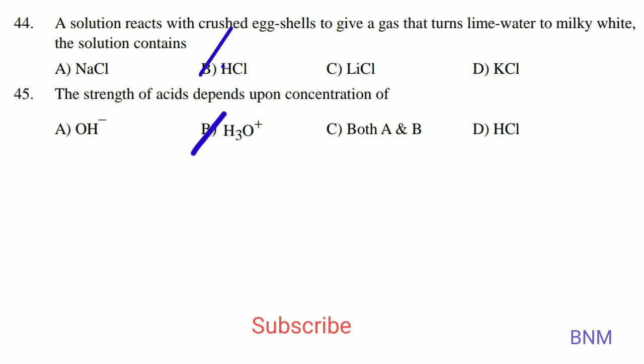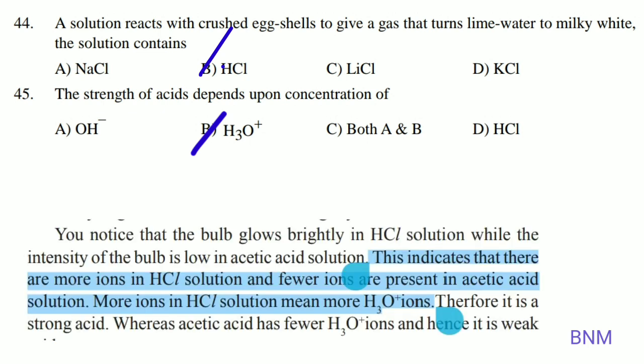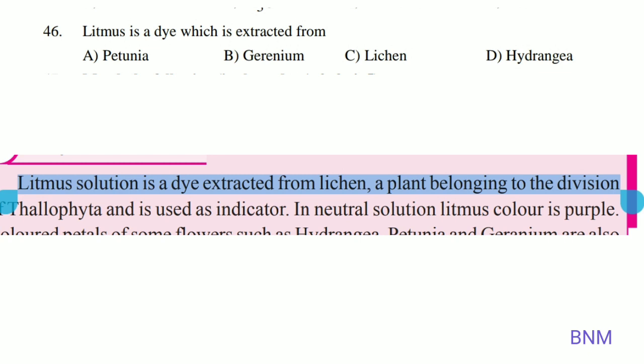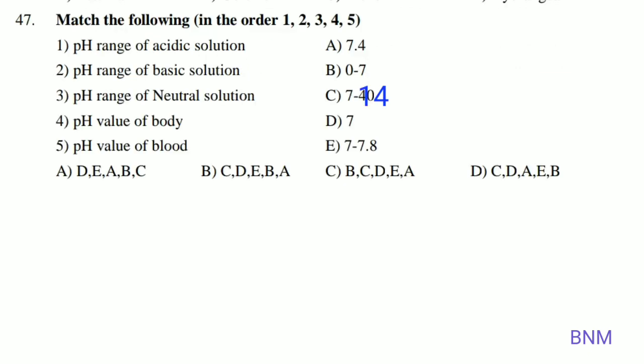The strength of acids depends upon the concentration of H3O⁺ ions. The concentration of H3O⁺ ions determines acid strength. The relevant pH values here are 7.2 and 7.8, giving answer E.